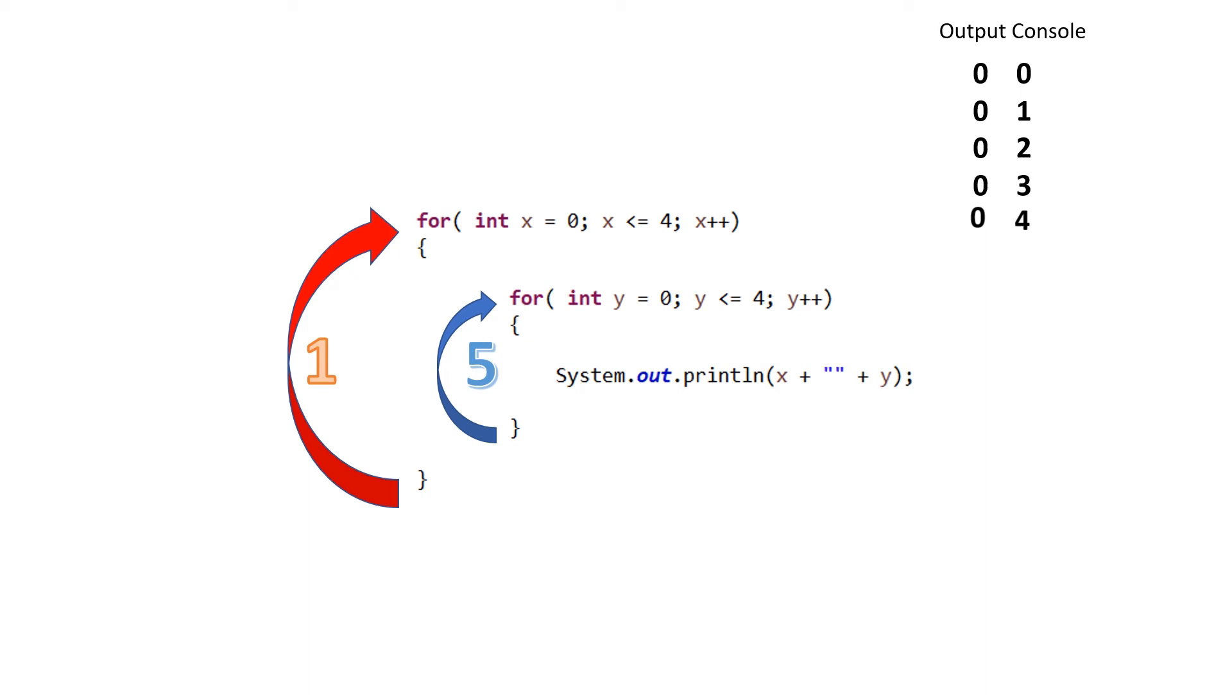In the outer for statement, the value of x, now 1, will be compared to the condition statement, is x less than or equal to 4. With x now having a value of 1, this statement is true, and the program will enter into the body of the outer loop.